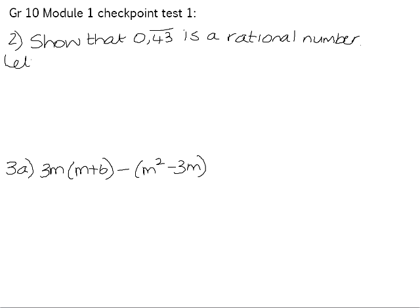So we start off by letting a variable equal to our recurring decimal. In this decimal we have two digits that are recurring, both the 4 and the 3, so we need to multiply by the power of 10 that has two zeros, which is 100. So we multiply both the left and right sides by 100. That gives us 43.43 recurring.